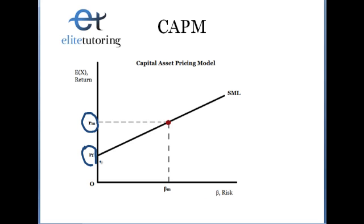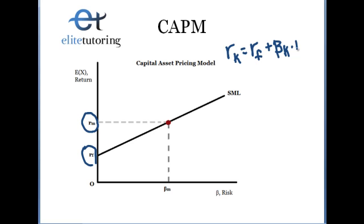For now, I'm just going to show you — we drew out the security market line here, which shows return versus risk, which we all know is a trade-off. And I'm just going to show you the equation for this model here. This is the return from a stock K that we would expect to get, and it would equal the risk-free rate plus the beta for that stock K times the market risk premium.